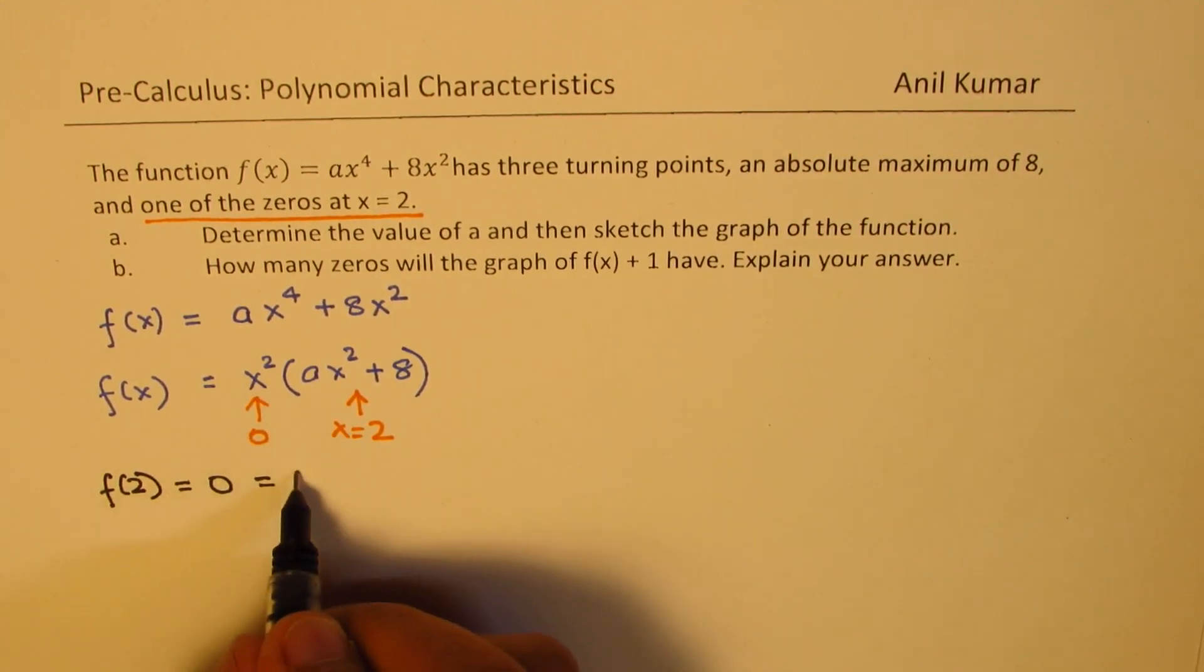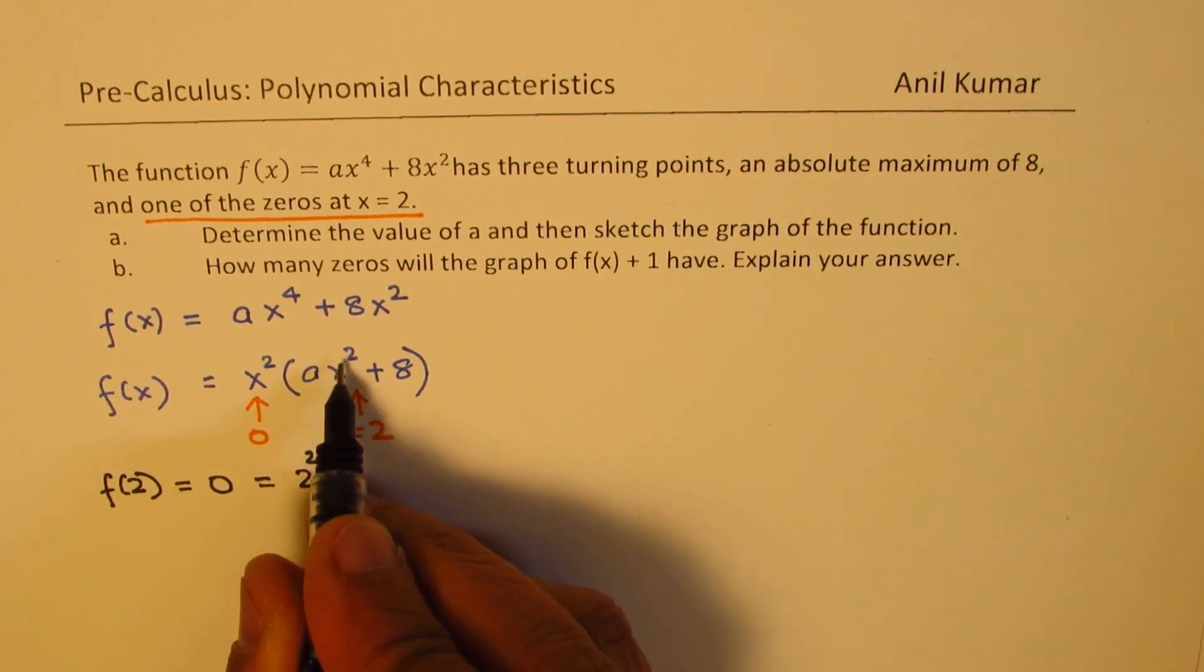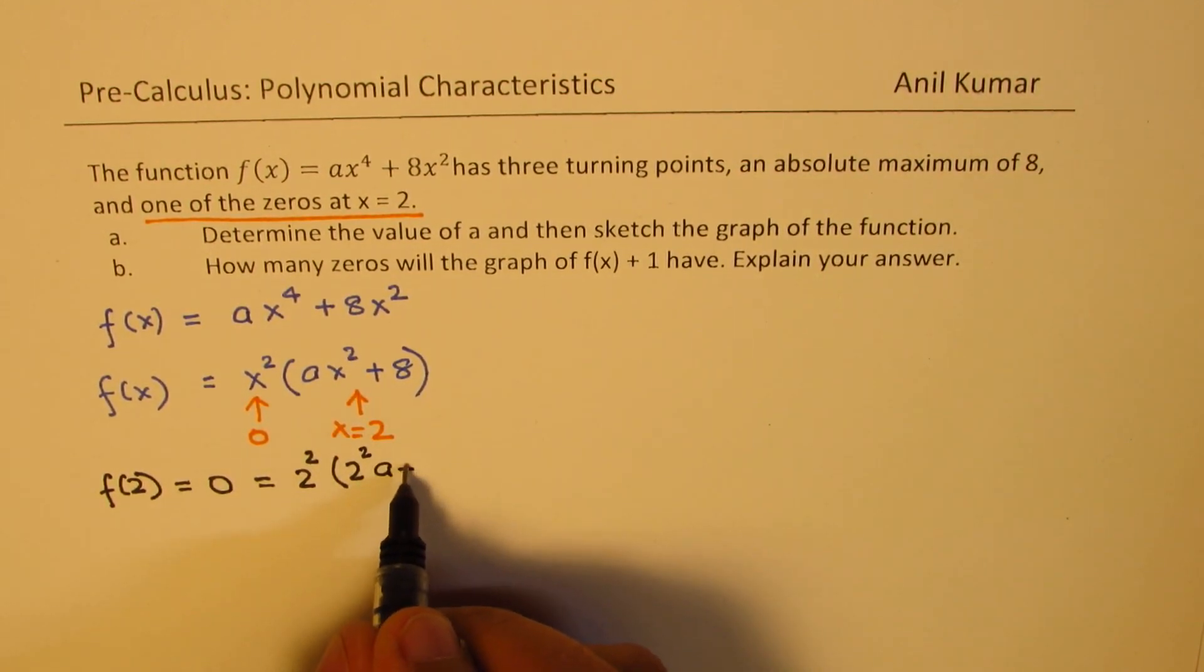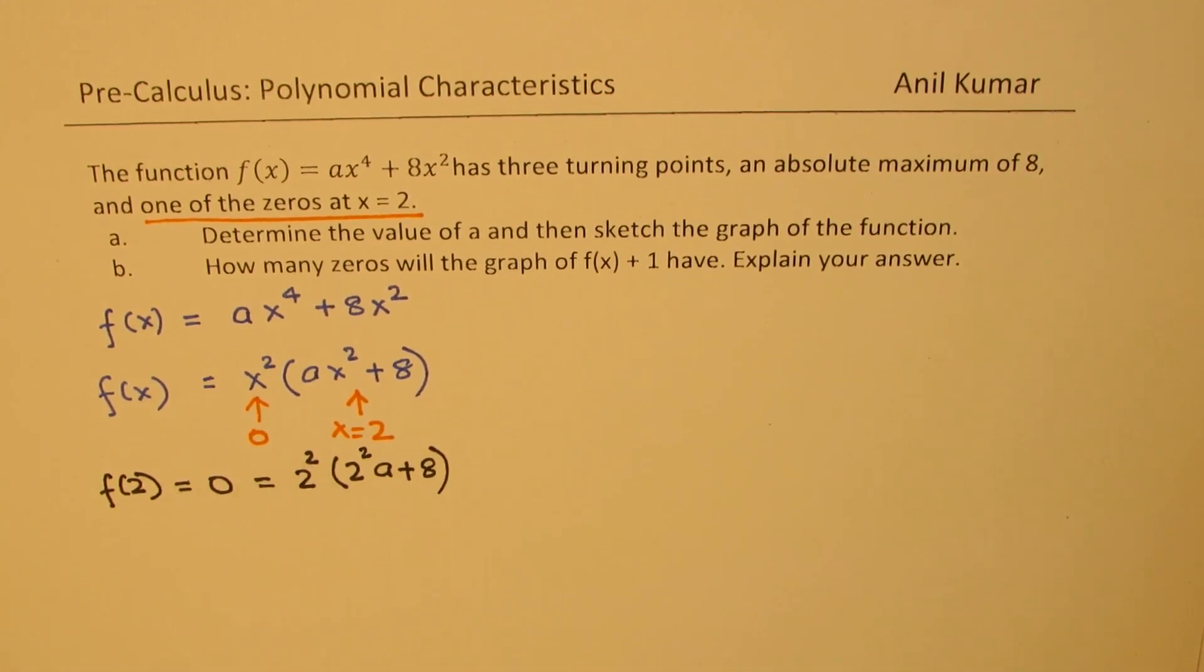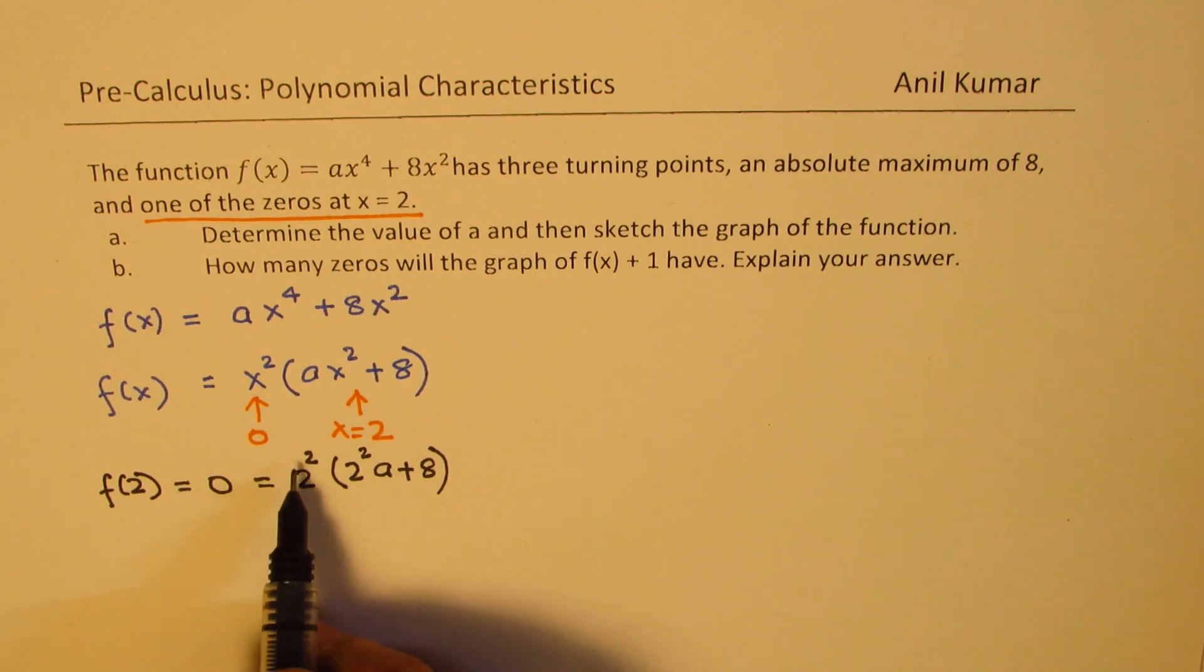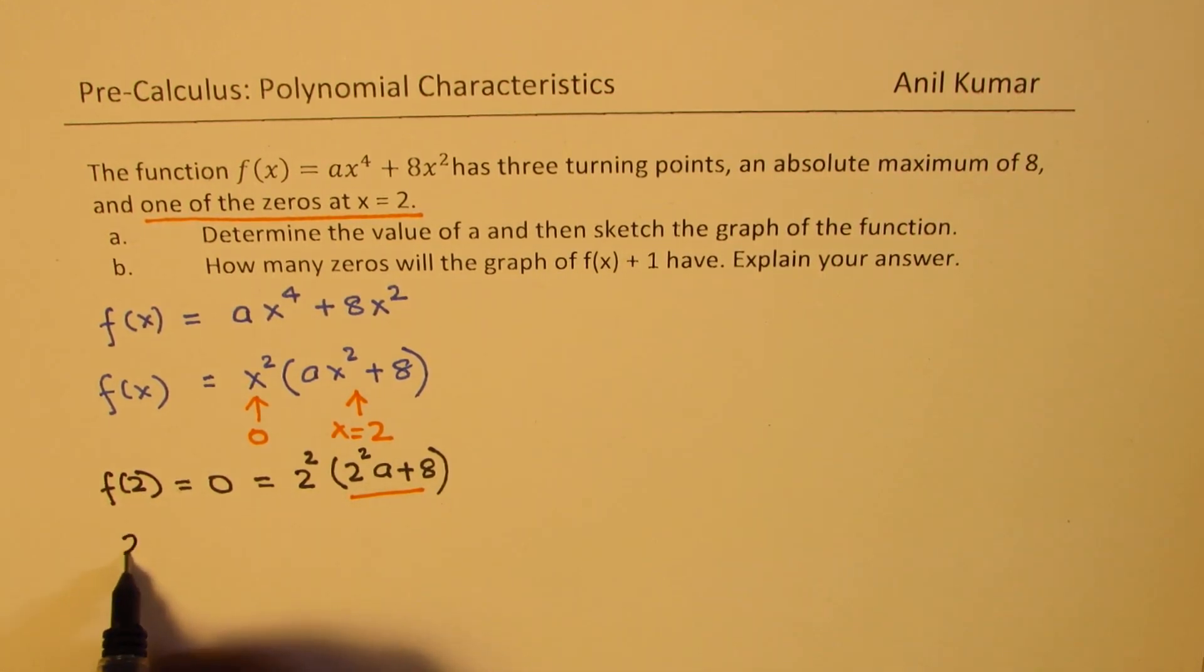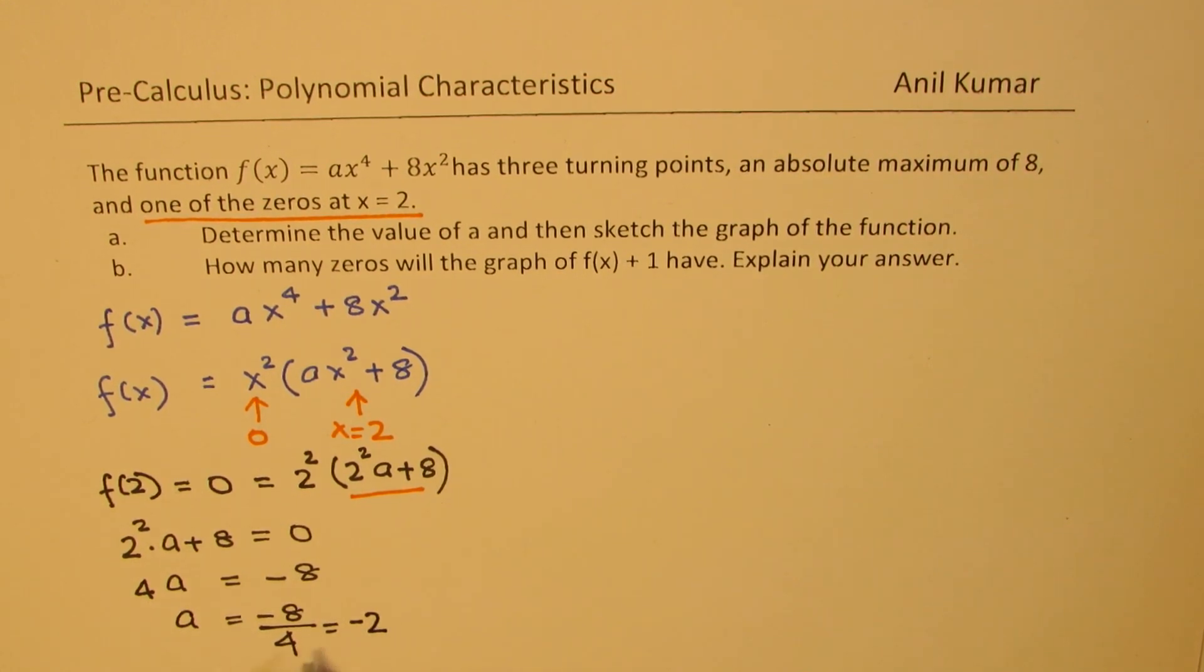If I substitute 2 here, we get 2 squared times 2 squared times a plus 8. Now 2 squared is 4, that cannot be 0. That means only 2 squared times a plus 8 could be 0. We can write that 4 times a equals minus 8. And taking 4 on this side, we get minus 8 over 4, which gives us minus 2 as our answer.